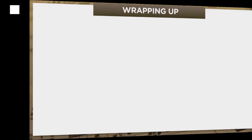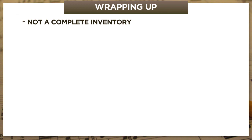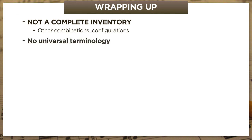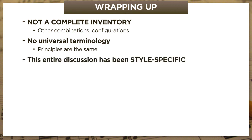So to wrap things up, three quick disclaimers. First, even in a video this long, I haven't given a complete inventory of non-chord tone types—there are other combinations, but you should now be able to recognize and identify them on your own. Second, there's no universal terminology for non-chord tones; the terms I've used may differ in other textbooks, but the principles are universal. Third, everything here is style-specific: non-harmonic tones outside of classical music are often treated much more freely. A firm grasp of non-chord tone treatment is essential if you're studying or composing in the classical style. Thanks for tuning in, and I'll see you next time for a discussion of classical cadences.